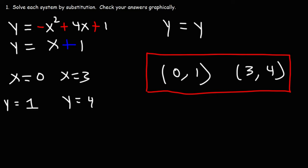To check our answers graphically, we're going to graph these two equations and find the points of intersection. If our answers are correct, the two graphs will intersect at the two points: (0, 1) and (3, 4).